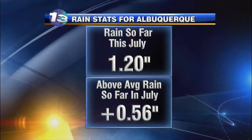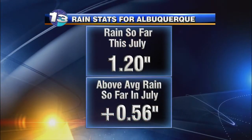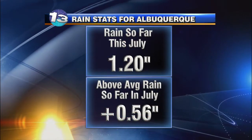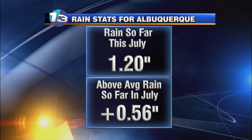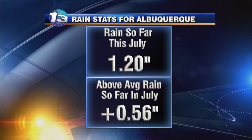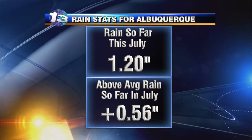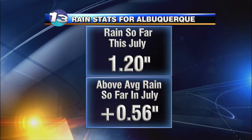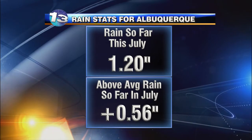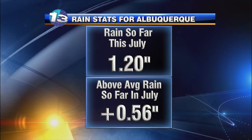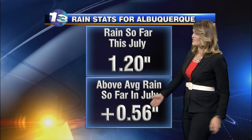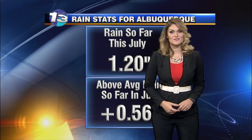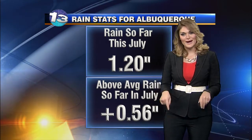Almost every day this month — 12 of the 15 days — we have seen at least a trace amount of rain here in the metro area. So far in our rain bucket this July, 1.2 inches of rain. Typical for the month of July we get about an inch and a half, so we are getting there pretty quickly and we're actually almost a half an inch above average from where we should be right at this date in July.